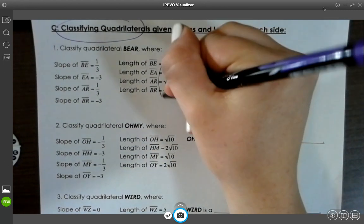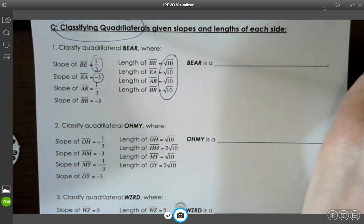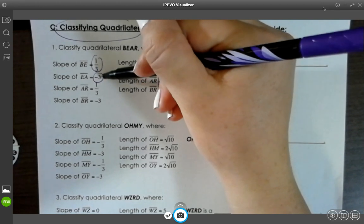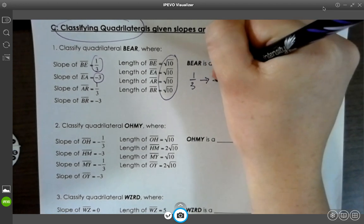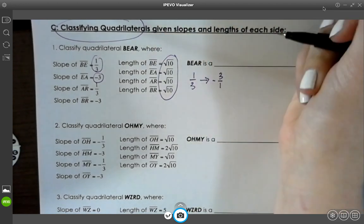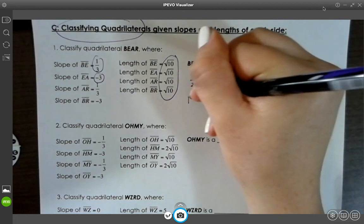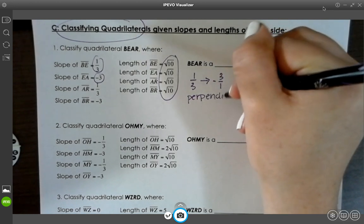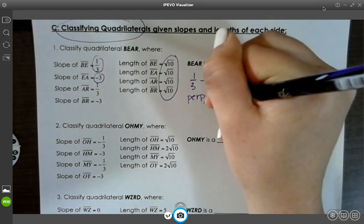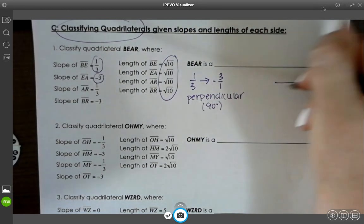I see that all of the lengths are the same. And the slopes, what do you notice about the slopes? They are opposite reciprocals, because 1 over 3 changed to negative 3 over 1, which is the same as negative 3. So that means that all of these sides are perpendicular, or 90 degrees, and all of the sides are the same length.